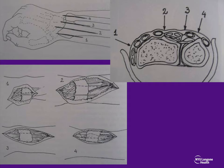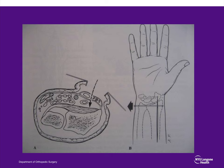When approaching the distal radius, there are several dorsal approaches available, typically named by the interval they traverse—1-2, 3-4, 4-5, 5-6, and so forth—giving views of different parts of the radius. The most commonly performed is the 3-4 approach between the EPL and EDC tendons. Palmarly, the FCR approach goes through the FCR sheath, while going between the FCR and the radial artery is the Henry approach. The palmar cutaneous nerve is in danger near the FCR sheath and must be protected. The palmar approach is typically used for volar buttress or volar locking plates.